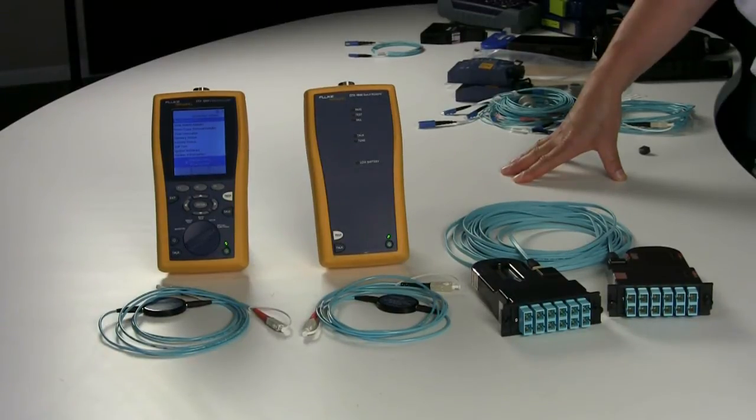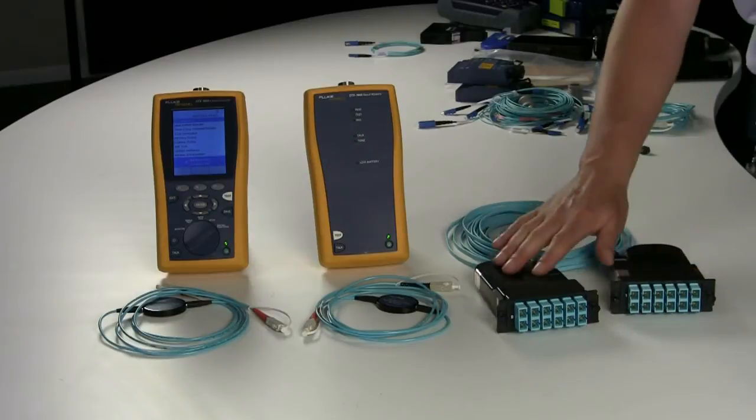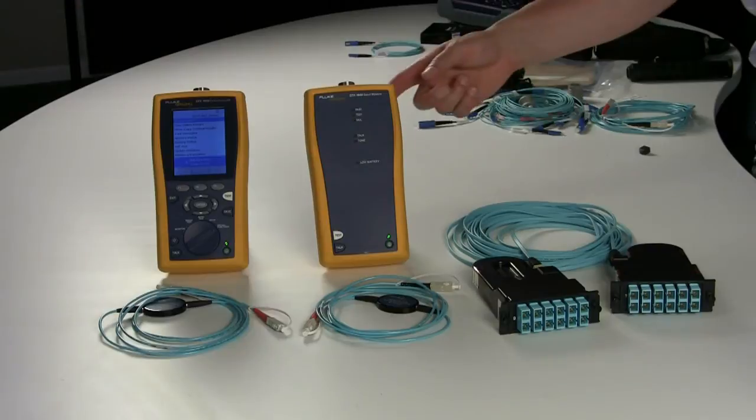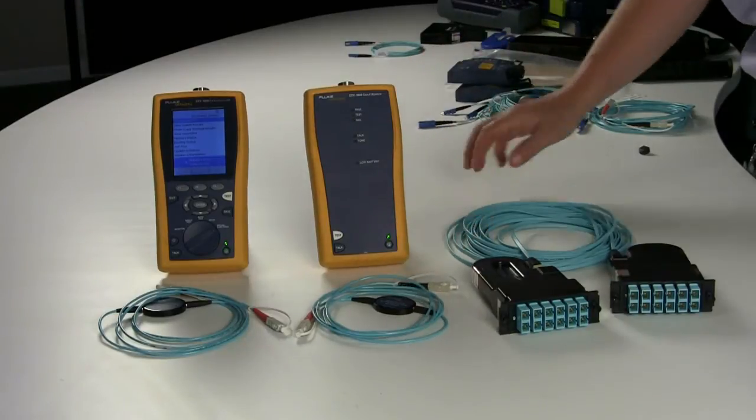Today we're going to demonstrate how to test a simple cassette to cassette based system with the new encircled flux or EF compliant Fluke test heads and Fluke test cords.